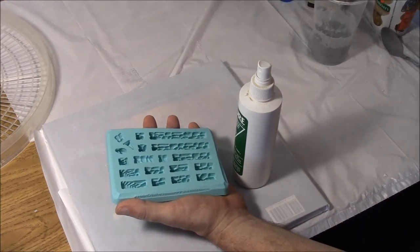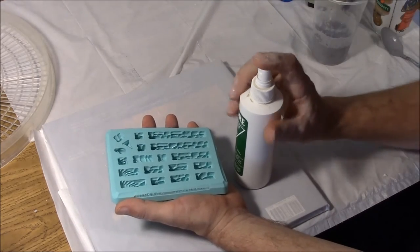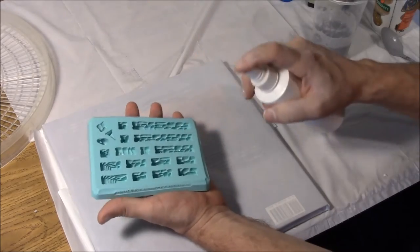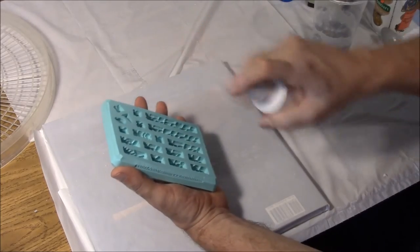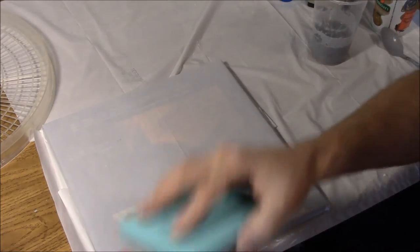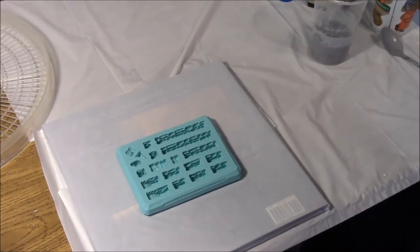Just squirt over the whole face of the mold and sort of smack out the excess and we're ready to pour it in.